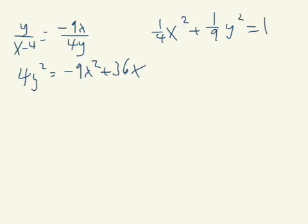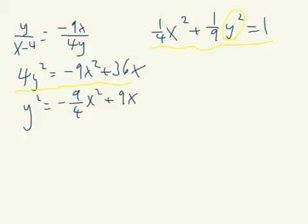I think one was y over x minus 4 and one was negative 9x over 4y. How do you solve this? Cross multiply and you have 4y² equals negative 9x² plus 36x. So what variable do you want to solve for and plug into the original? We're going to come back to this equation. If I solve for y² over here, we'll have negative 9/4 x² plus 9x.